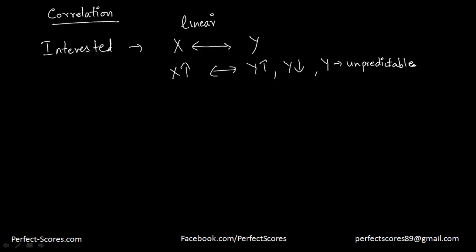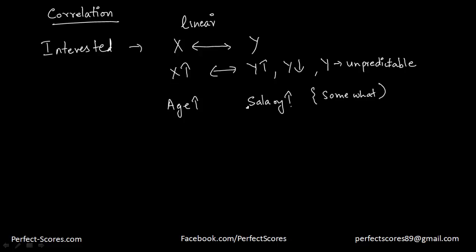So that is what correlation means. In real life terms, let's say two variables: a person's age and a person's salary. As you can see, age and salary have somewhat positive correlation — as age increases, salary also increases. It's a somewhat positive correlation, not a perfectly positive correlation. So that means if age increases, salary also increases. Correlation tells you how two variables behave with respect to each other.